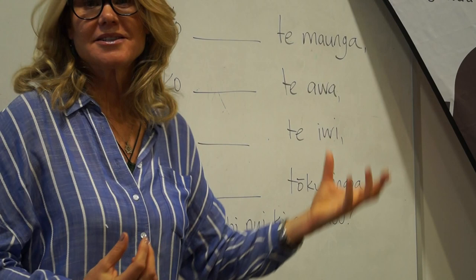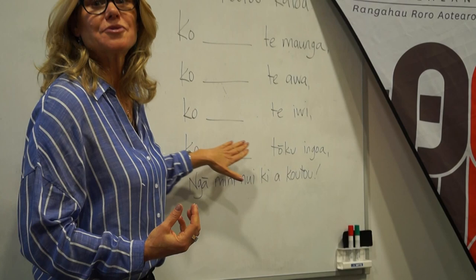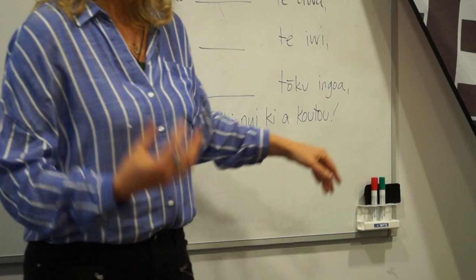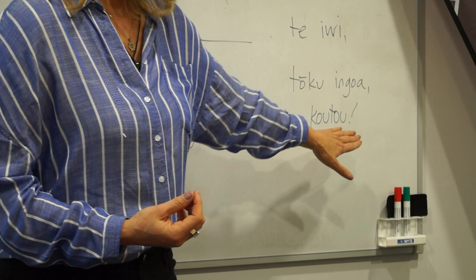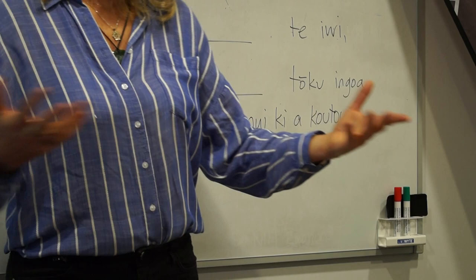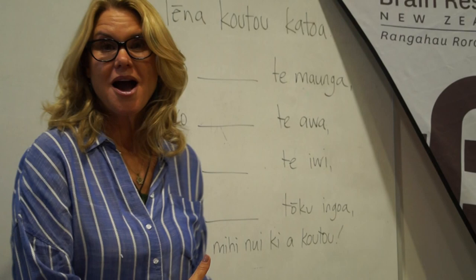You may affiliate to people of Celtic descent, people of Spanish descent, so you will include the kūpu for those people in this area. And here is the space for your name — tōku ingoa means 'my name'. Tōku in this context is the word for 'my', and ingoa is the word for 'name'. And finally, ngā mihi nui ki a koutou — this means general greetings to you all.